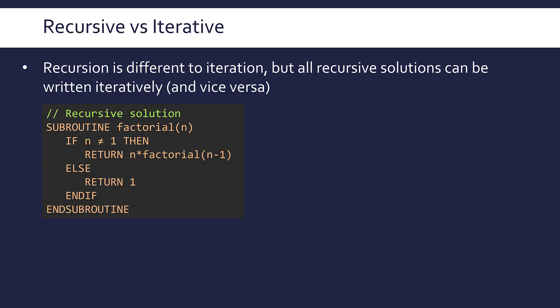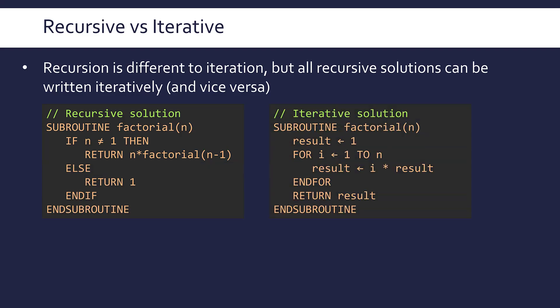To show you an example — a classic one — which is about factorials: on the left is a recursive solution and on the right is an iterative solution. Both do the exact same thing; both will give you the factorial of a number, but approach it in a different way.